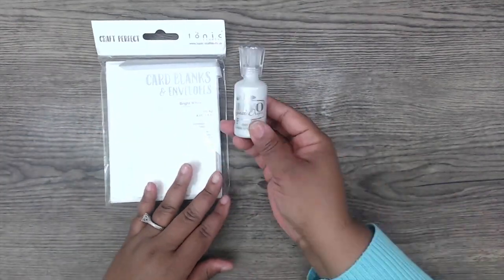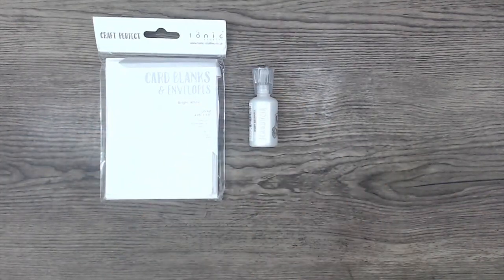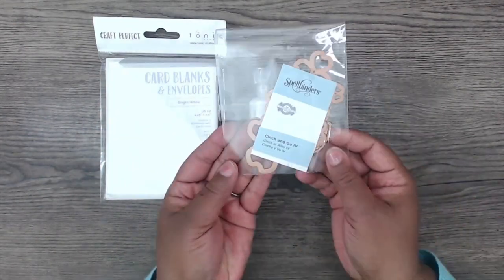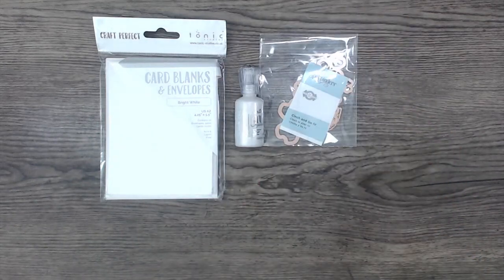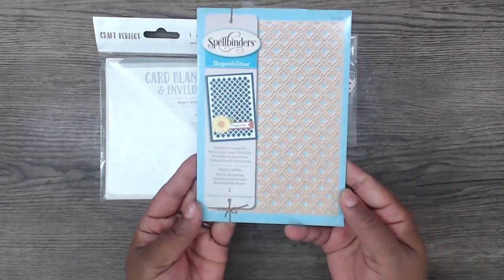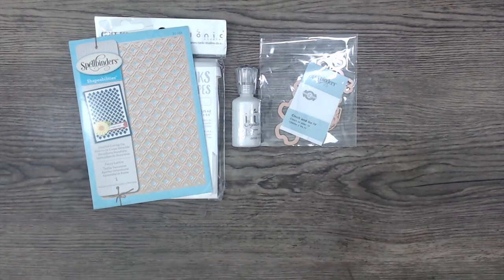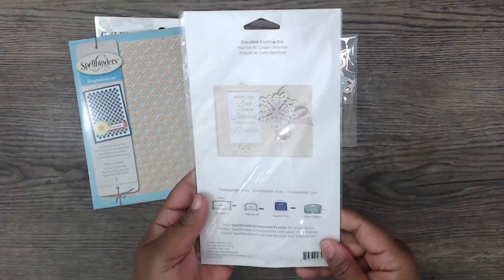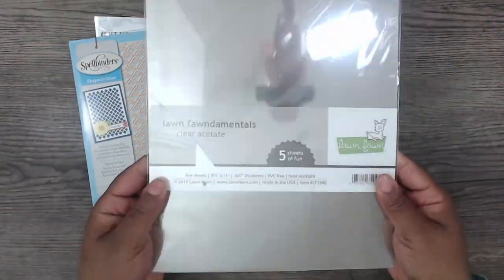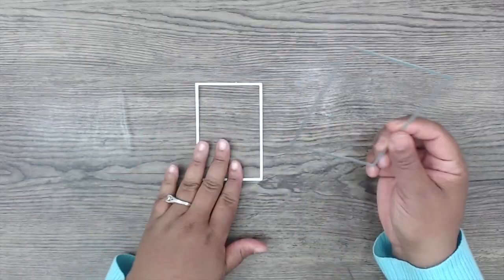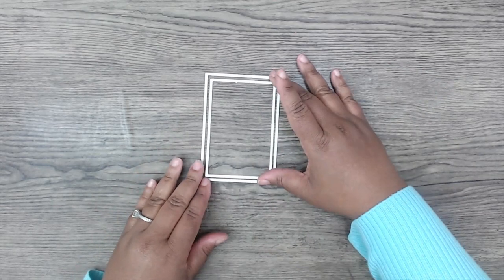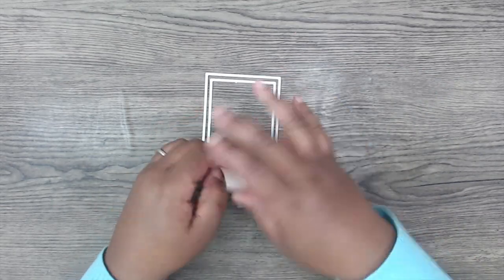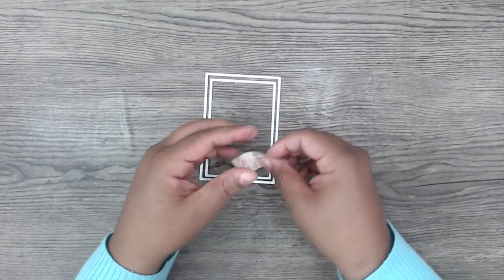The items for the next card are the Card Blanks by Tonic Studio, the Crystal Nouveau Drops in Ivory Seashell, the Spellbinders Cinch and Go Four, the Spellbinders Fancy Lattice. We're also going to use Laced Flowers and Lawn Fundamentals Acetate. You will also need a Rectangular Nesting Die. I will provide a substitute down below. You want to create a frame.